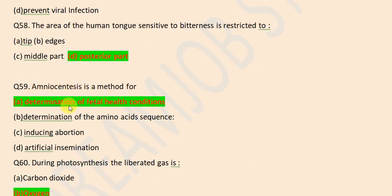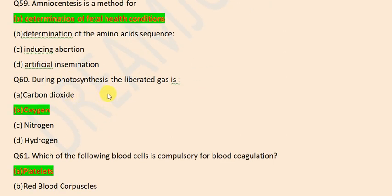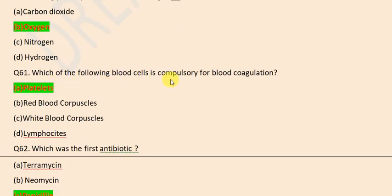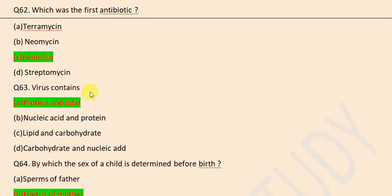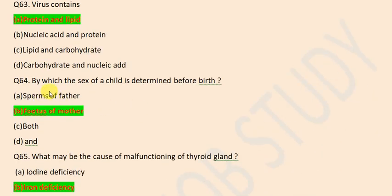Amniocentesis is a method of determination of fetal health condition. During photosynthesis the liberated gas is oxygen. Which of the following blood cells is compulsory for blood coagulation? Platelets. Which is the first antibiotic? Penicillin. Virus contains protein and lipid. By which the sex of child is determined before birth? Fetus of mother.